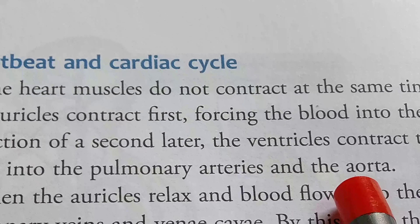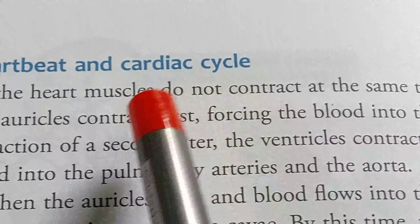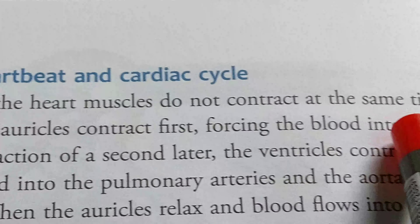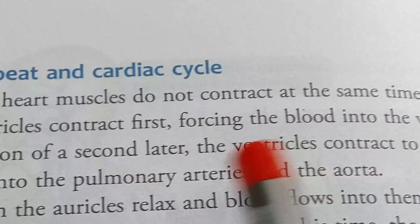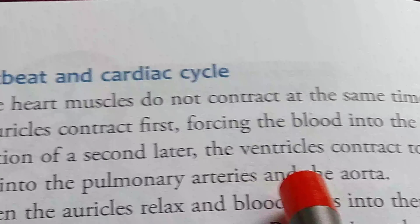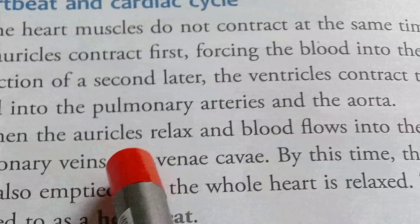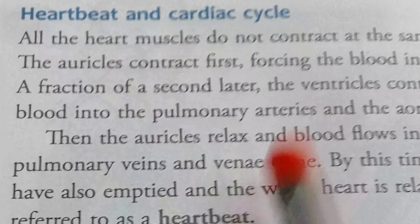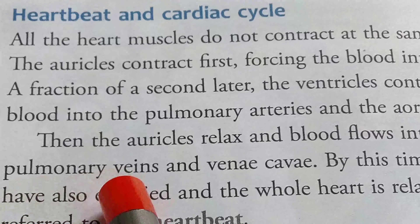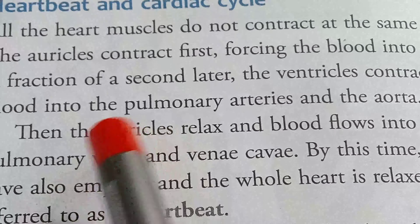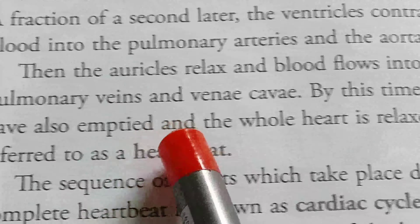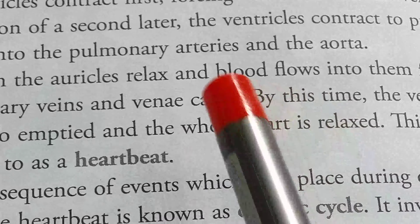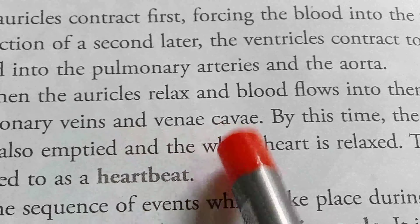So basically, all the muscles are not contracting at the same time. The auricles contract first and push the blood into the ventricles, then the ventricles contract and push the blood into the pulmonary arteries and aorta. Then the auricles relax and blood flows into them from the pulmonary veins and vena cava. By this time the ventricles have also emptied.